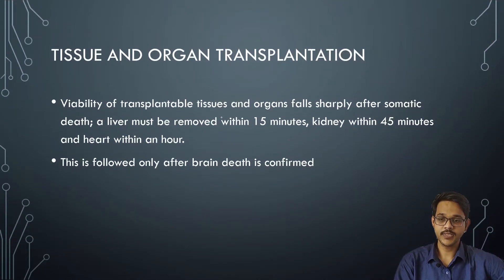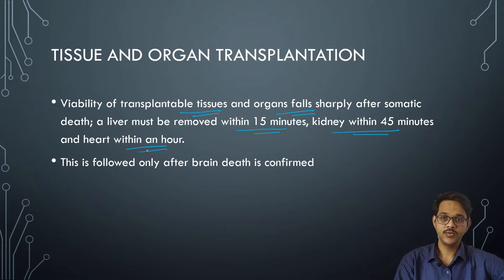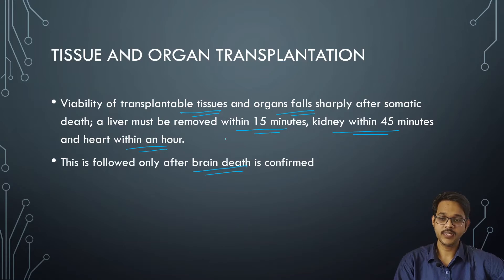Tissue and organ transplantation. Viability of transplantable tissues and organs falls rapidly after somatic death. A liver must be removed within 15 minutes, kidney within 45 minutes, and heart within an hour. After the person is confirmed brain dead, family members can donate the person's organs for transplantation within these time windows.